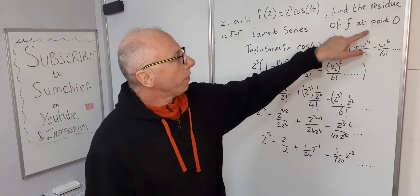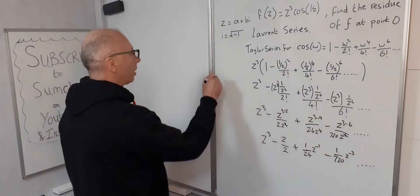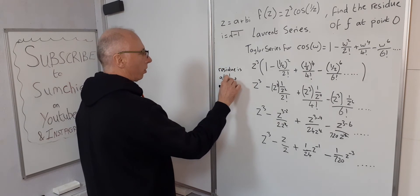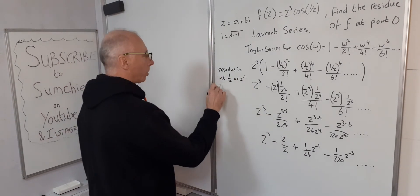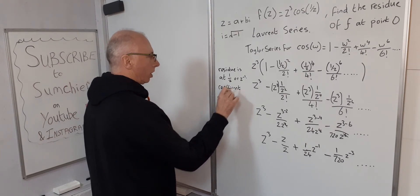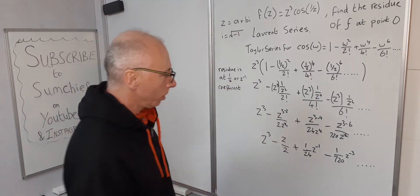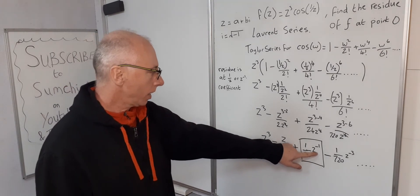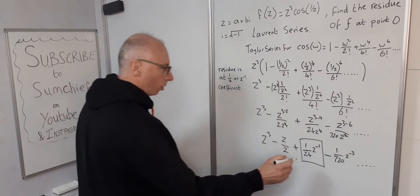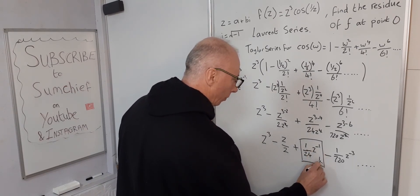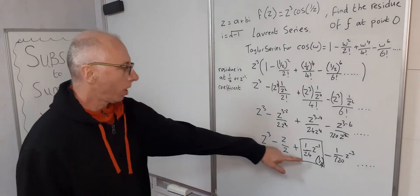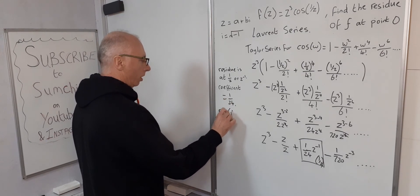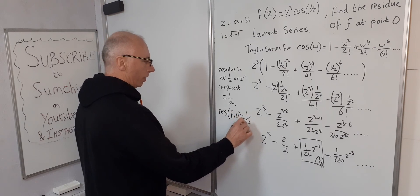The question asks for the residue of f at point 0. The residue is defined as the coefficient of the z⁻¹ term in the Laurent series — equivalently, the coefficient of 1/z. Looking at our series, the z⁻¹ term is (1/24)z⁻¹, so the coefficient is 1/24. Therefore, the residue of f at 0 is 1/24.